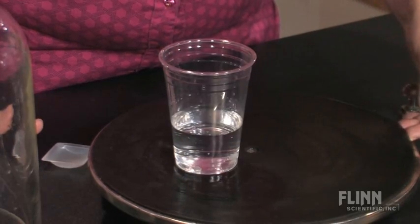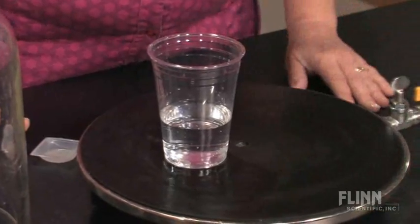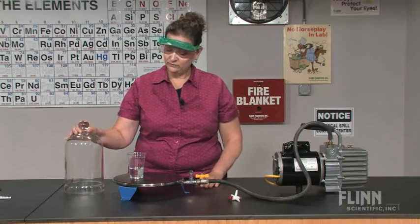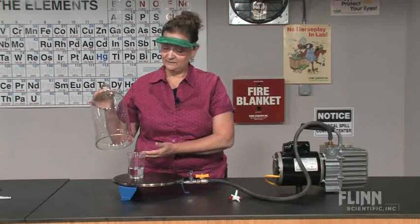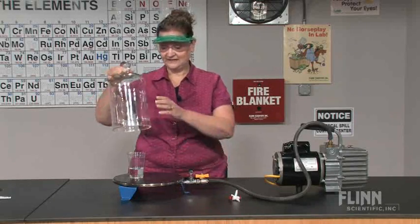Most vacuum plates have a rubber gasket for a good seal with your bell jar. If not, you can run a little bit of vacuum grease around the bottom of the bell jar, so you get a really good seal.